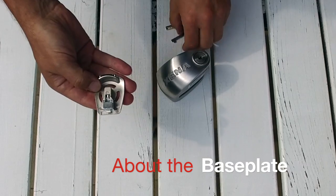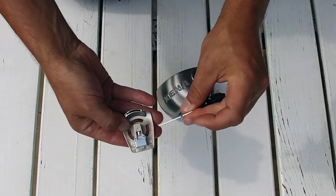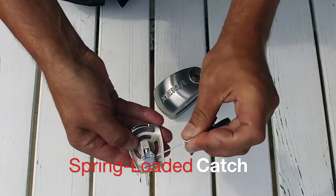Access the module to change battery by removing the base plate. Use the key tool provided to pull the spring-loaded catch.